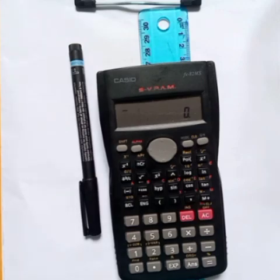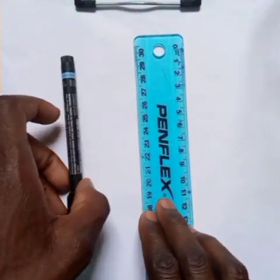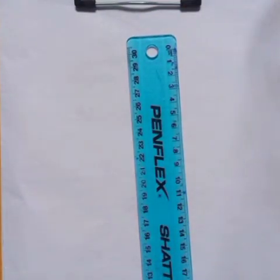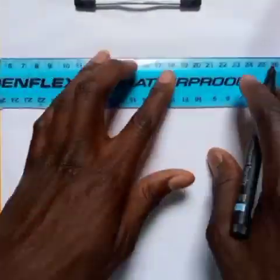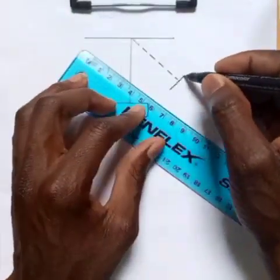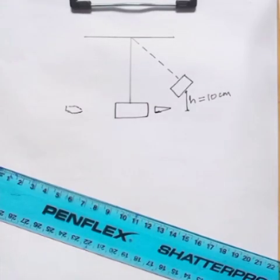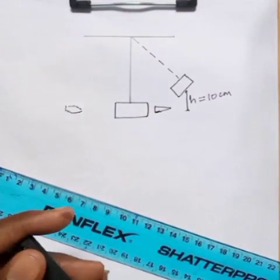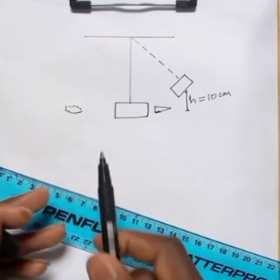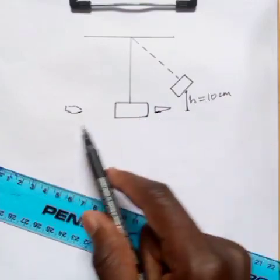I'll start by drawing the diagram being described. Now, a good number of people are used to what we call a perfectly inelastic collision, whereby if the bullet sticks to the block they move together as a whole. But in this case, the bullet entered and came out, so the block then started moving up and down.